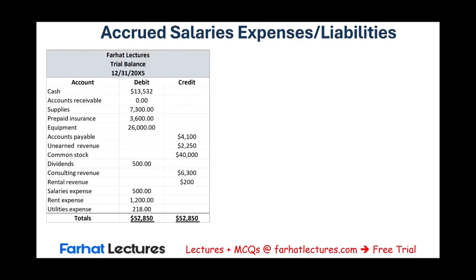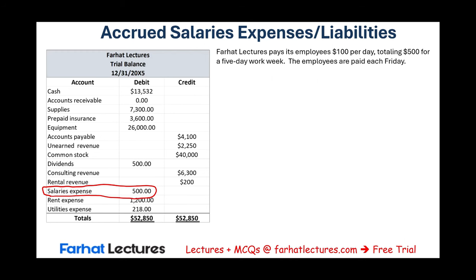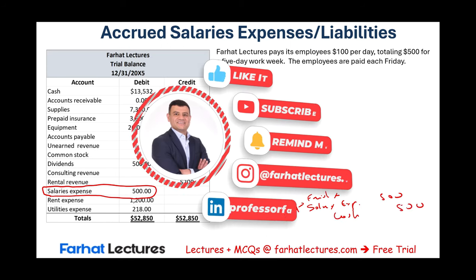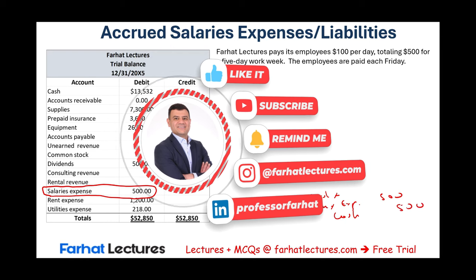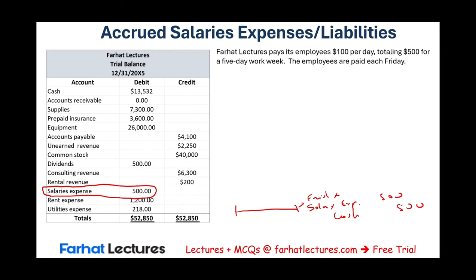Let's illustrate this concept using our trial balance for Farhat Lectures. At this point I have $500 of salaries expense. Farhat Lectures pays its employees $100 per day, totaling $500 for a five-day workweek. The employees are paid each Friday. On Friday, Farhat Lectures debits salary expense and credits cash $500. And indeed, if you look at my trial balance, I do have $500 of salaries expense — meaning for this particular year I only paid for one week.